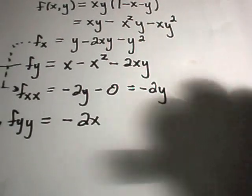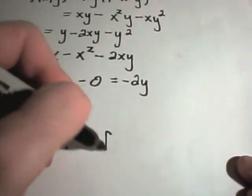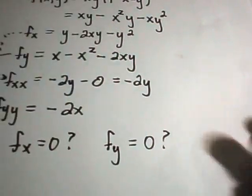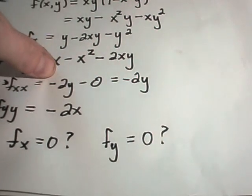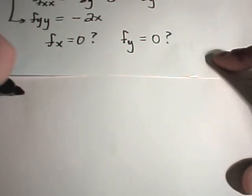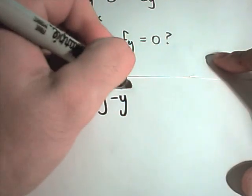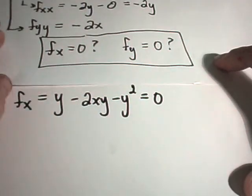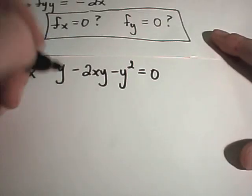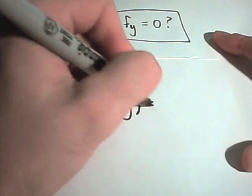So now I've got all my partials. The next thing I need to do is solve — I need to figure out where the partial with respect to x equals zero, and also the same point that makes the partial with respect to y equal to zero. So if we set the partial with respect to x equal to zero, that means y minus 2xy minus y squared equals zero. We can factor out a y, and I'll be left with y times (1 minus 2x minus y) equals zero.